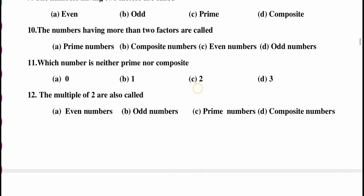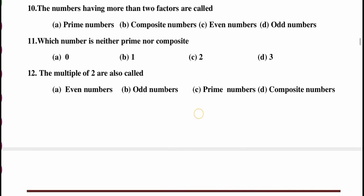Question number 10: numbers having more than 2 factors are called — prime numbers, composite numbers, even numbers, or odd numbers? The answer is composite numbers.